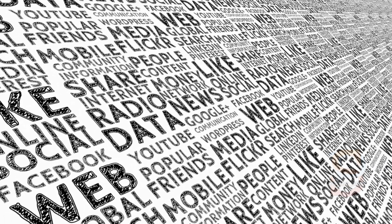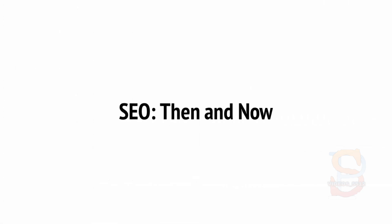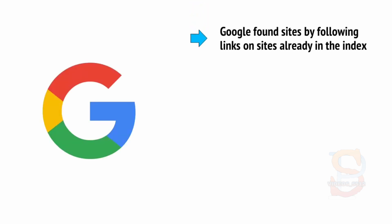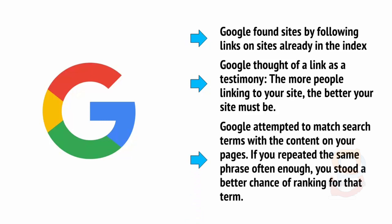If we knew precisely how Google's algorithm worked, then we could get to the top of the search results with guaranteed certainty. As we don't know this, all we can do is make educated guesses and hope that these get us to the top of Google. When Google first became the dominant search engine, the algorithm was fairly straightforward and was generally quite well understood by marketers. Back then we knew that Google found sites by following links on sites already in the index. Google thought of a link as testimony — the more people link into your site, the better your site must be. Google also attempted to match search terms with the content on your pages; if you repeated the same phrase often enough, you stood a better chance of ranking for that term.